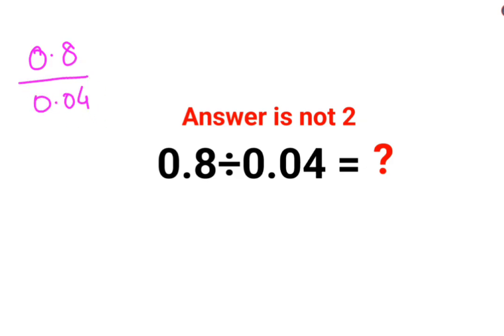Now when you have something like this, if you have any doubt, you need to convert 0.8 as a fraction, which is 8 upon 10, divided by 0.04, which can be written as 4 upon 100.